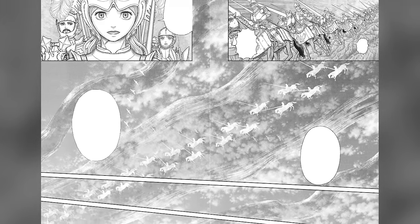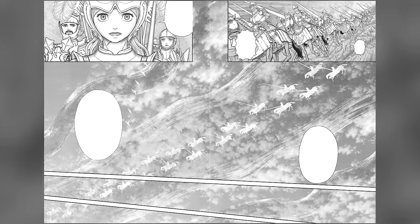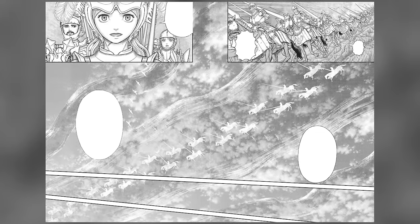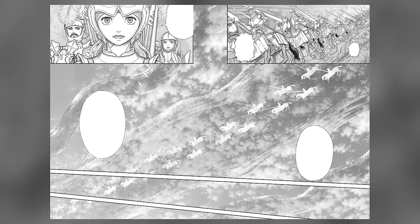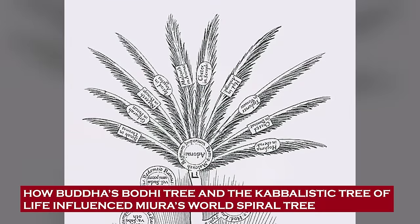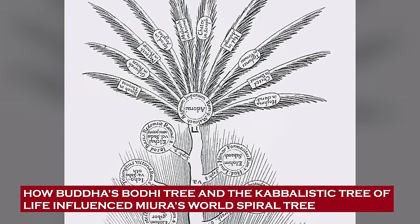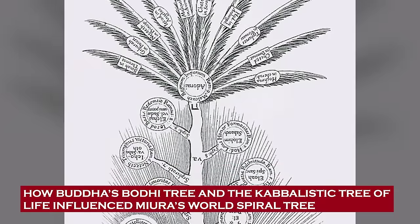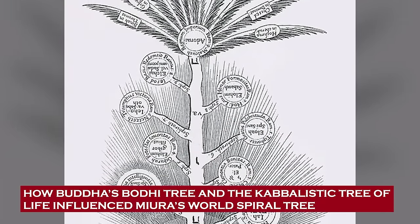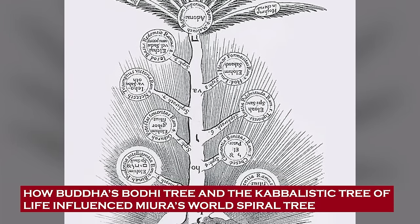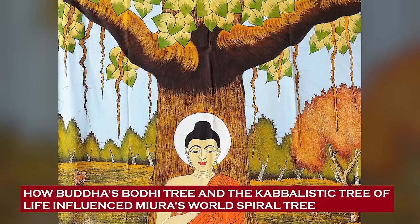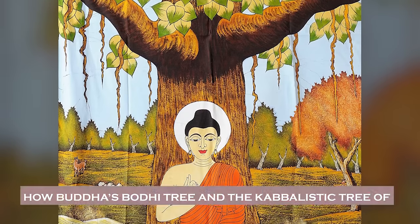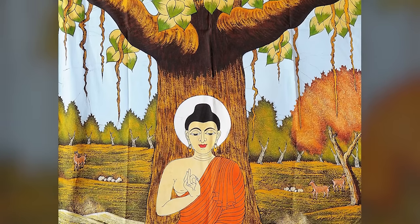Not only does the World Tree connect the three worlds mentioned in Berserk, it also gives you the means to travel through them without hindrance, provided you know how to do so. And speaking of enlightenment, let's talk about the second comparison Miura makes for his tree, which is with the Bodhi tree under which Gautama Buddha achieved enlightenment. Buddha became Buddha through a rigorous regime of meditation, fasting, and introspection as he sat underneath his Bodhi tree, but that isn't the exact reference being made here.